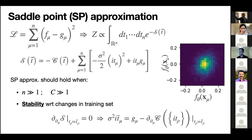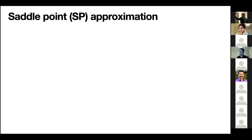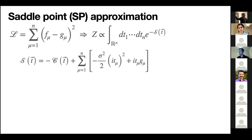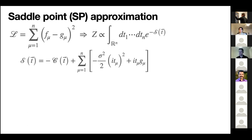A question from the chat: why do we need the saddle point approximation? The integral is high-dimensional, and 𝒮 depends on the CGF 𝒞, which is a series of all powers of T incorporating all higher-order terms. The only integral we know how to solve is the Gaussian one — when we only have quadratic terms in T. With higher-order powers in T, the integral is not directly solvable, so we must use some approximation.